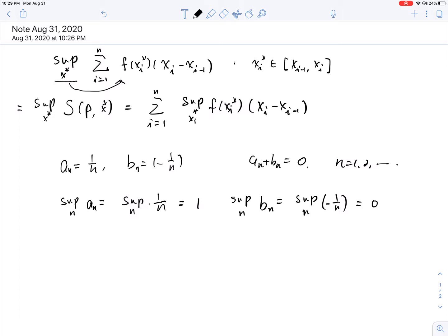So now we see that supremum over n, an + bn, is 0. So this is completely 0, which is not equal to supremum n an plus supremum n bn, and this is equal to 1, so they are not equal.